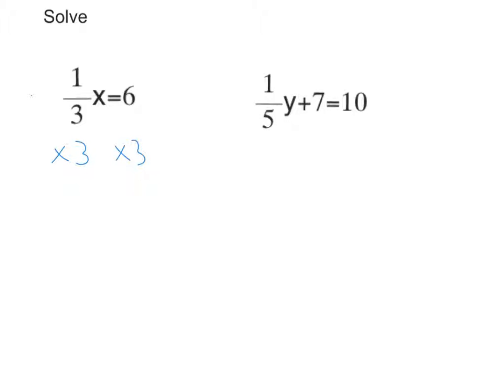So what happens to the left-hand side? Well, the third and the 3 cancel, so I'm just left with my x. And then I do 6 times 3, which is 18. So my answer is x equals 18.